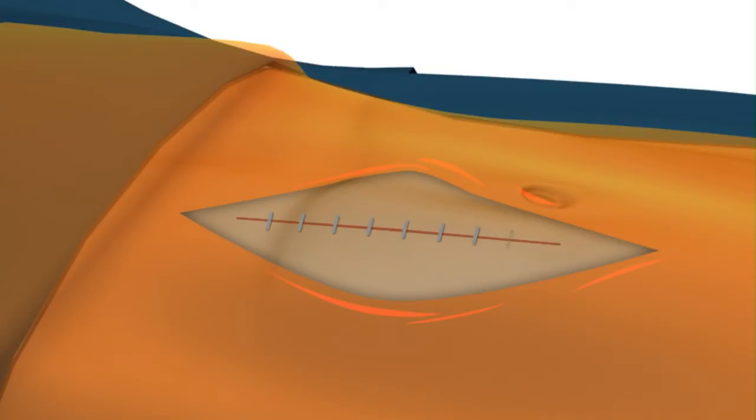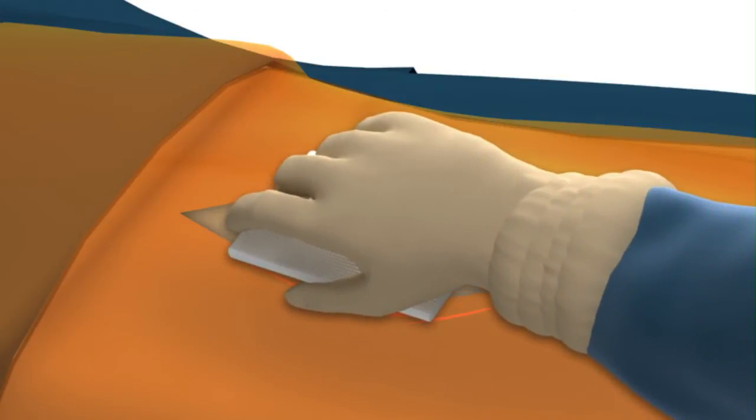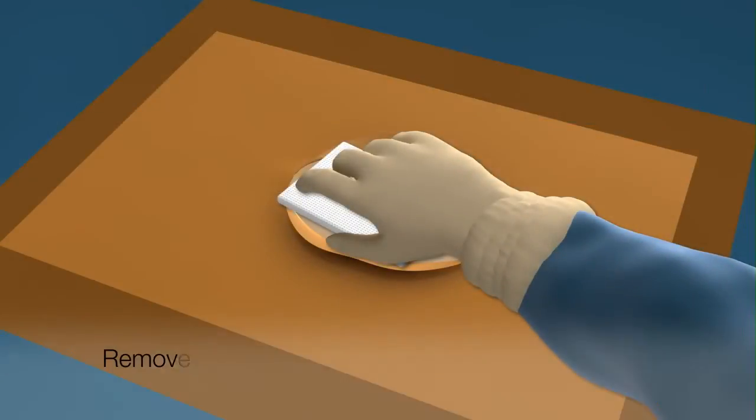After skin closure, cover the incision with the wound dressing. To remove the 3M Ioban II incise drape, fold the drape with attached linens, if used, back on itself at a 180 degree angle.